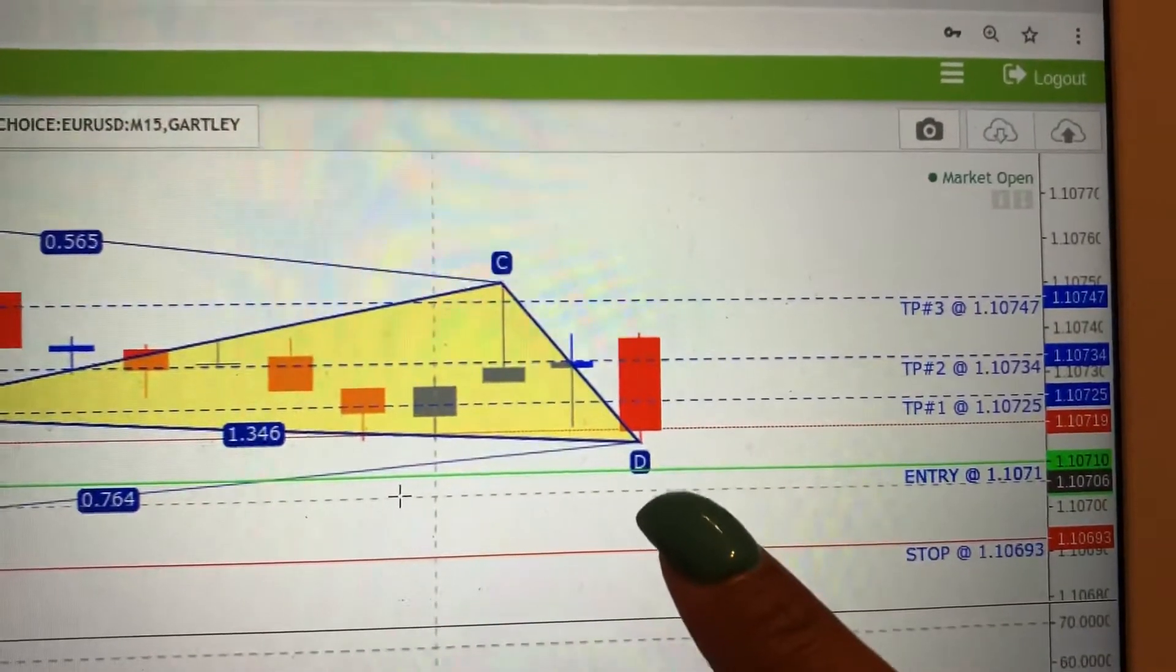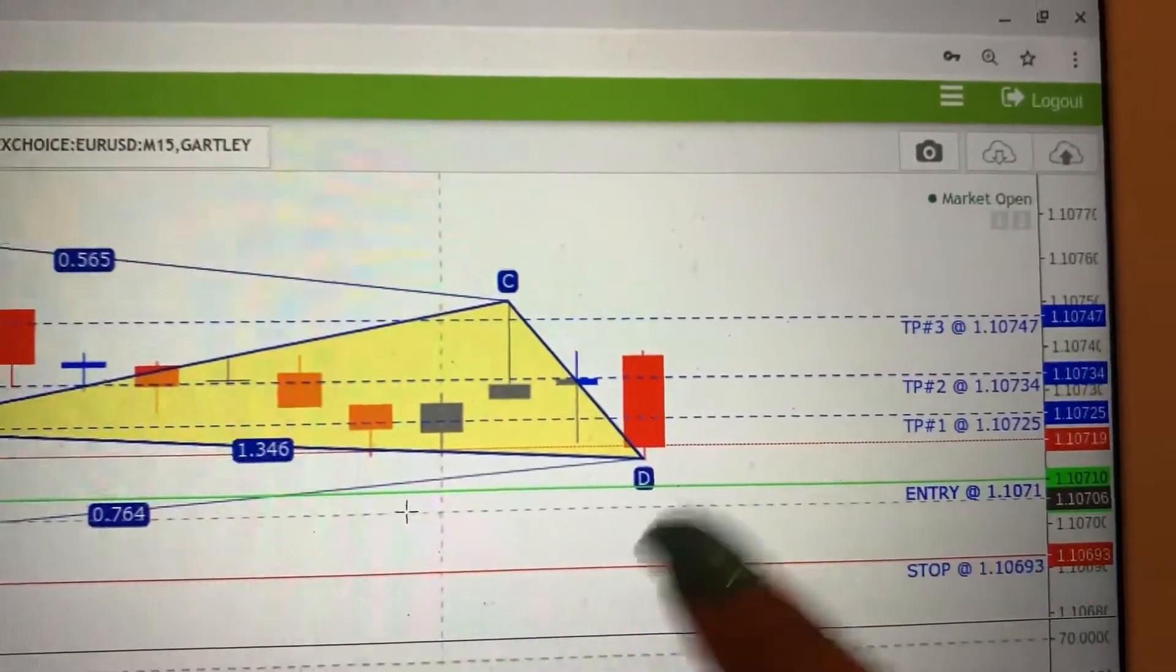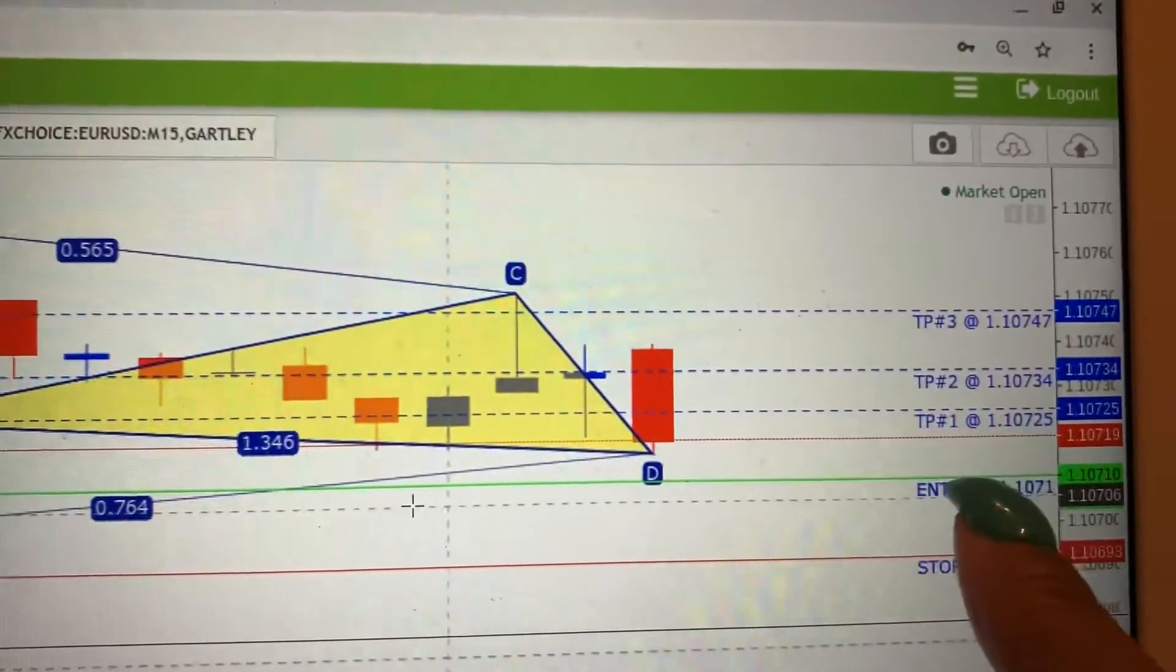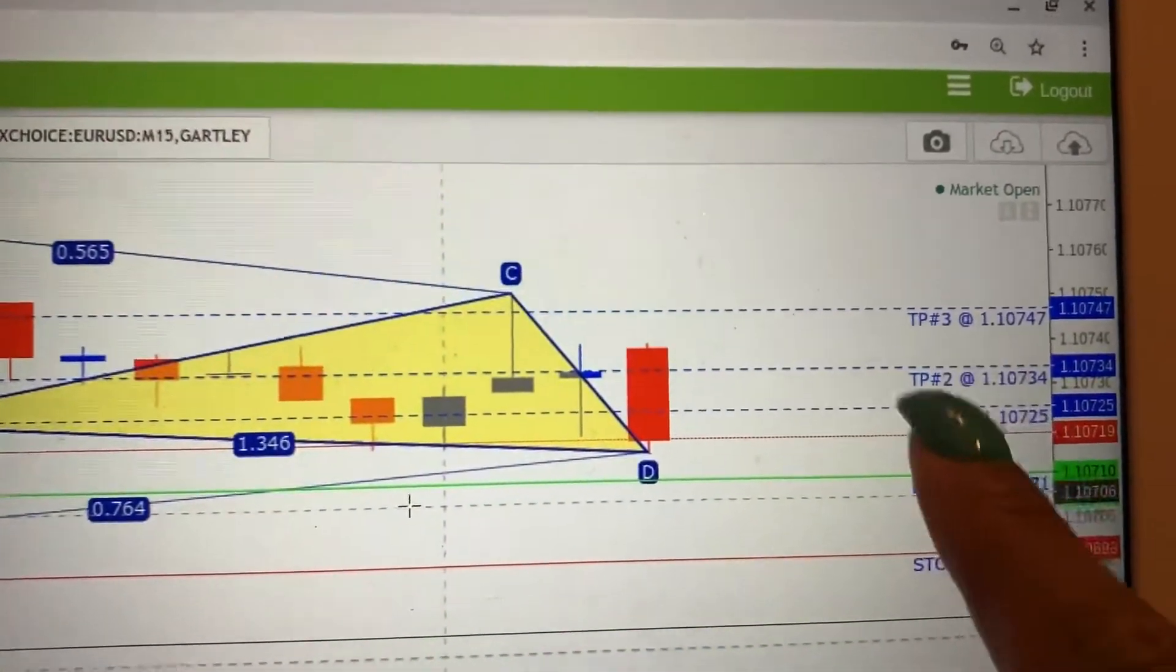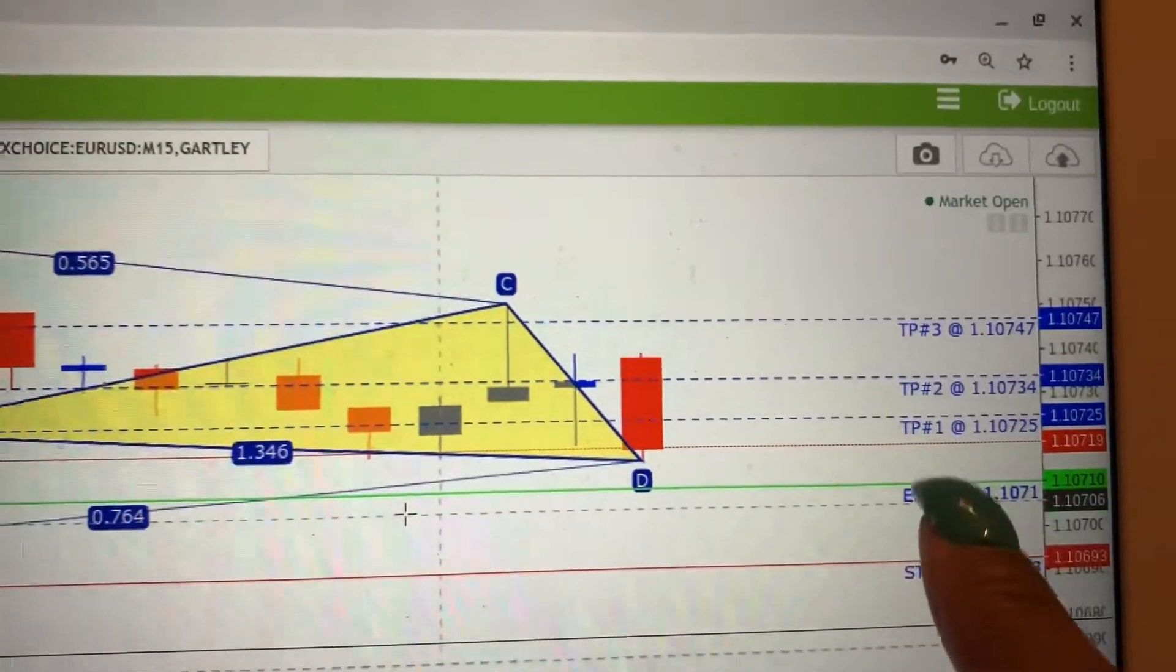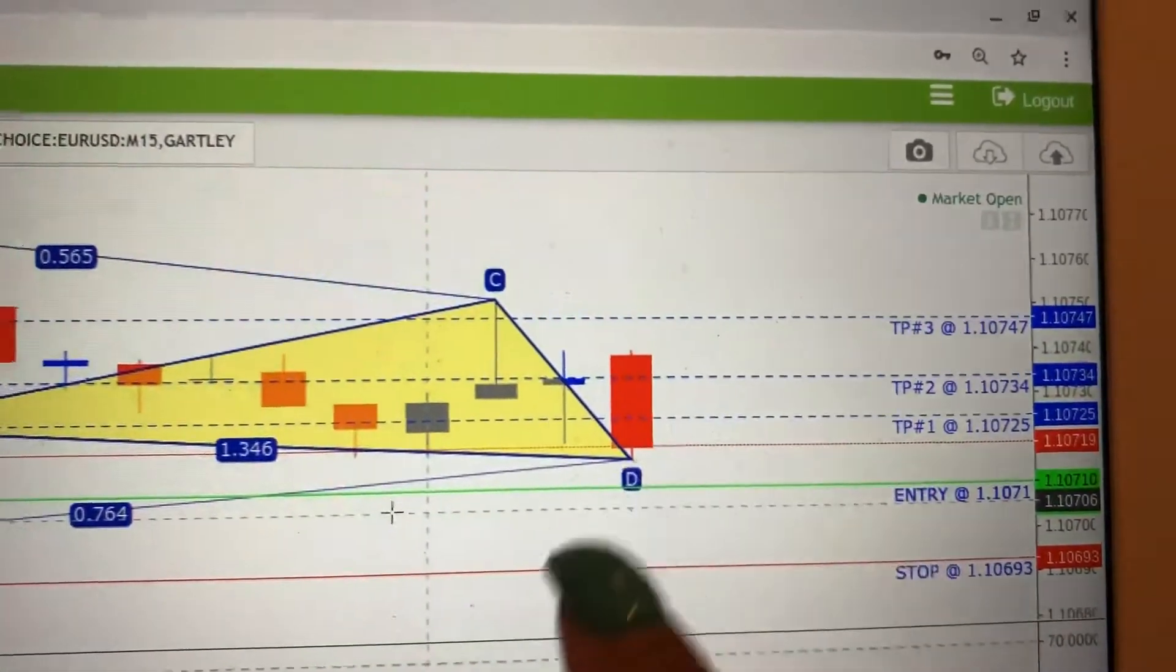So, because the D is low, we buy low. And of course, it's a buy because the entry is below the take points, take profit points, so we want the market to go up. So, we buy low.